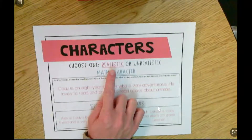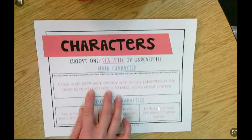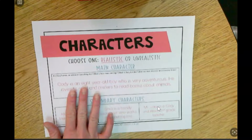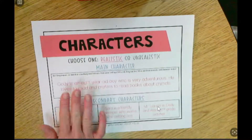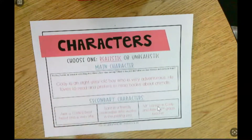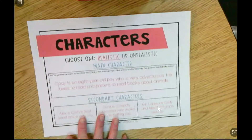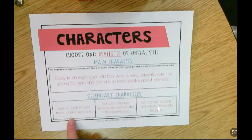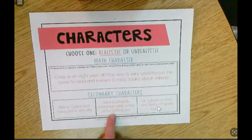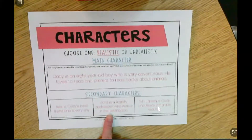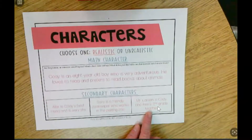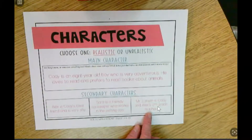Cody is my main character in my story. He's eight years old, he likes to learn about animals, and he likes to read books about animals. There are secondary characters: Alex is his best friend and is very shy, Sarah is a zookeeper at the petting zoo, and Mr. Larson is Cody and Alex's second grade teacher.